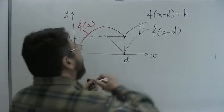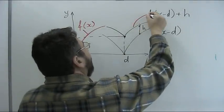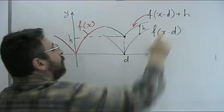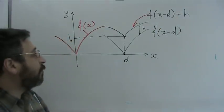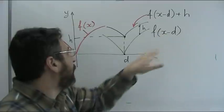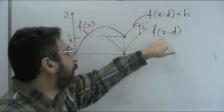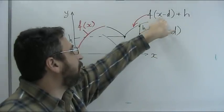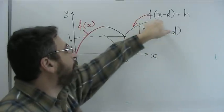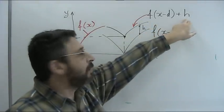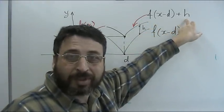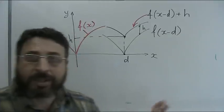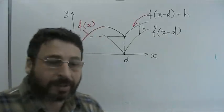How can I see this? This is f(x-d)+h. Let's, for example, check at the bottom point. When x is equal to d, f(x-d) is 0 and the total value will be h. But we can do similar checks for other points as well.